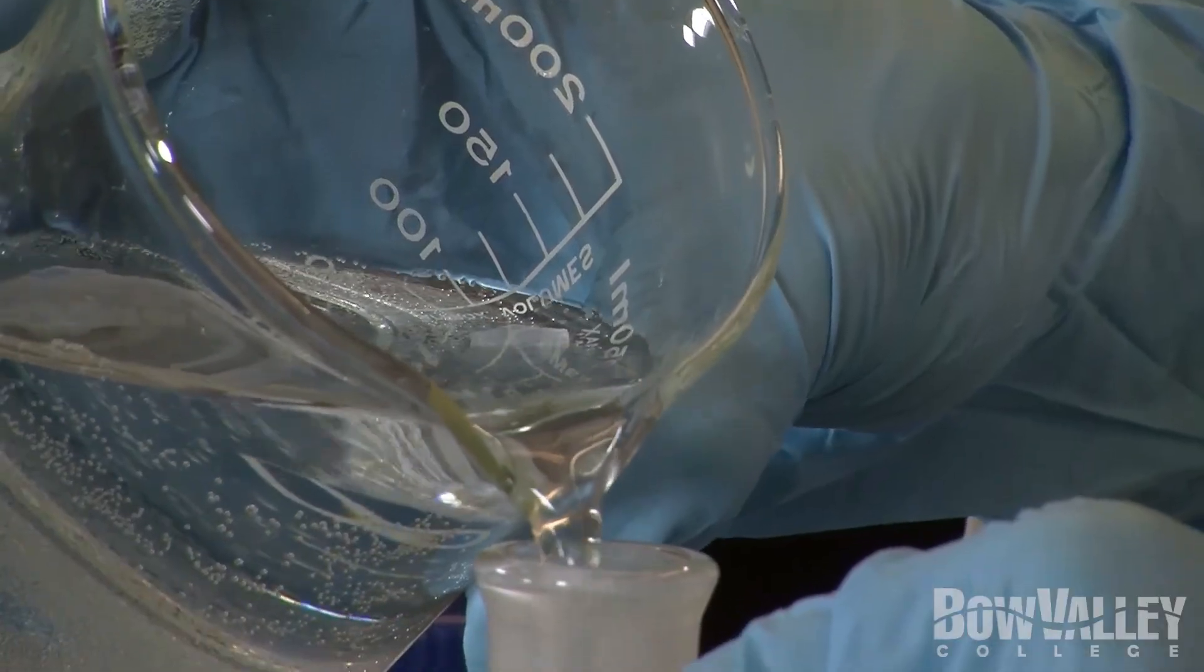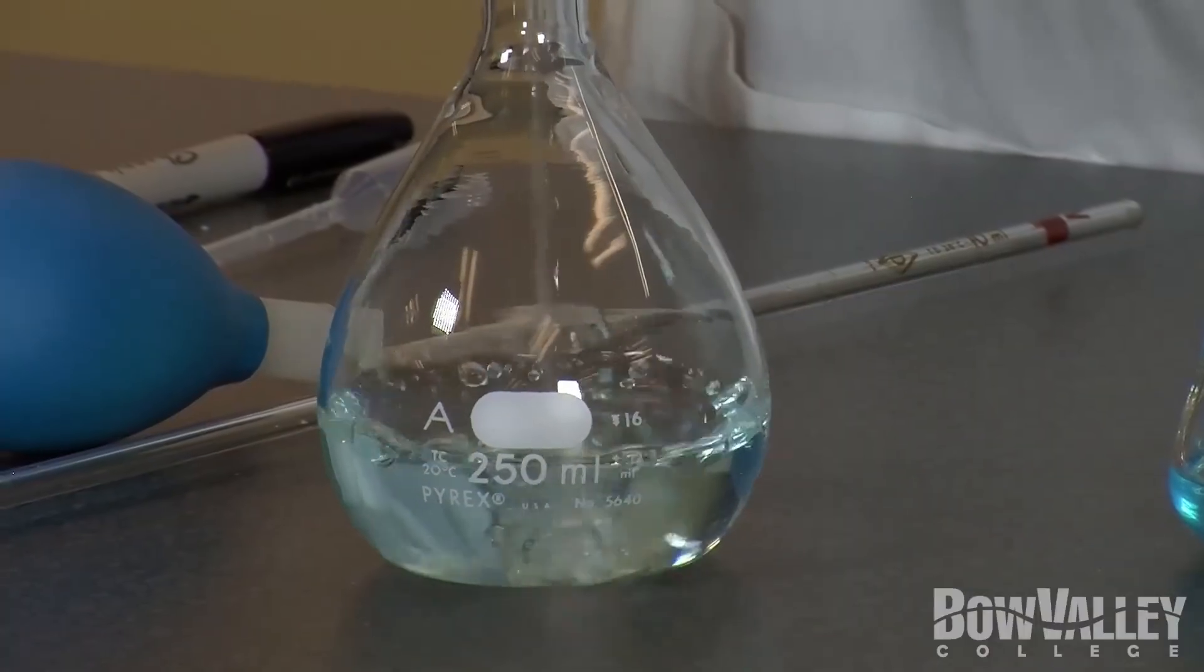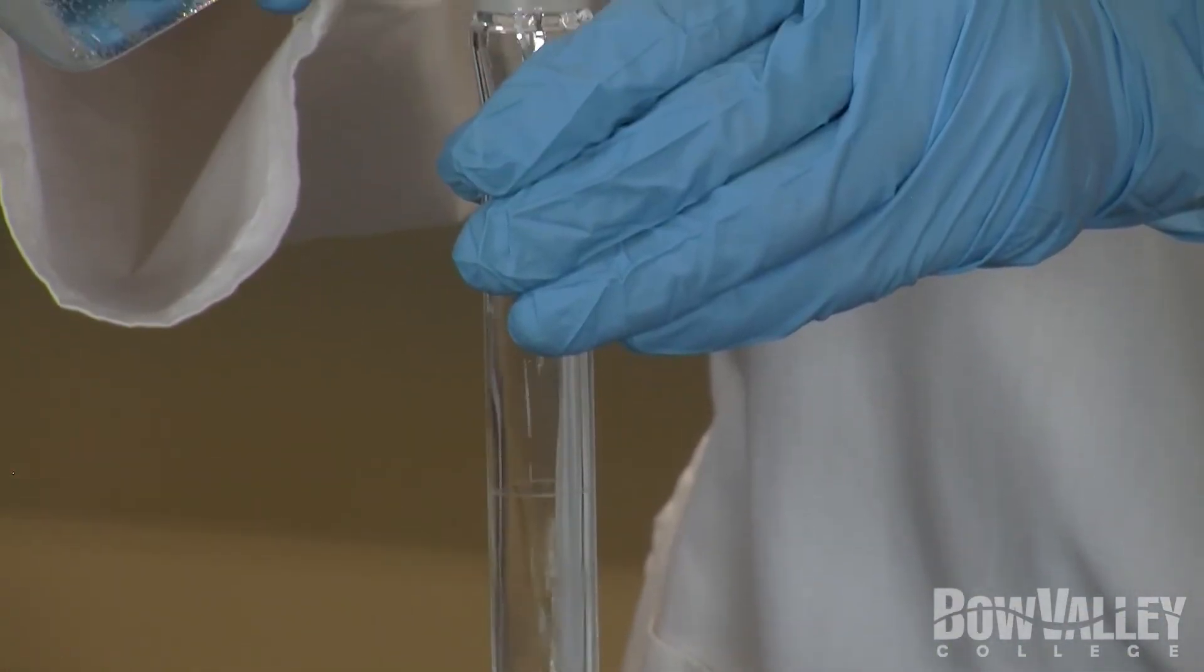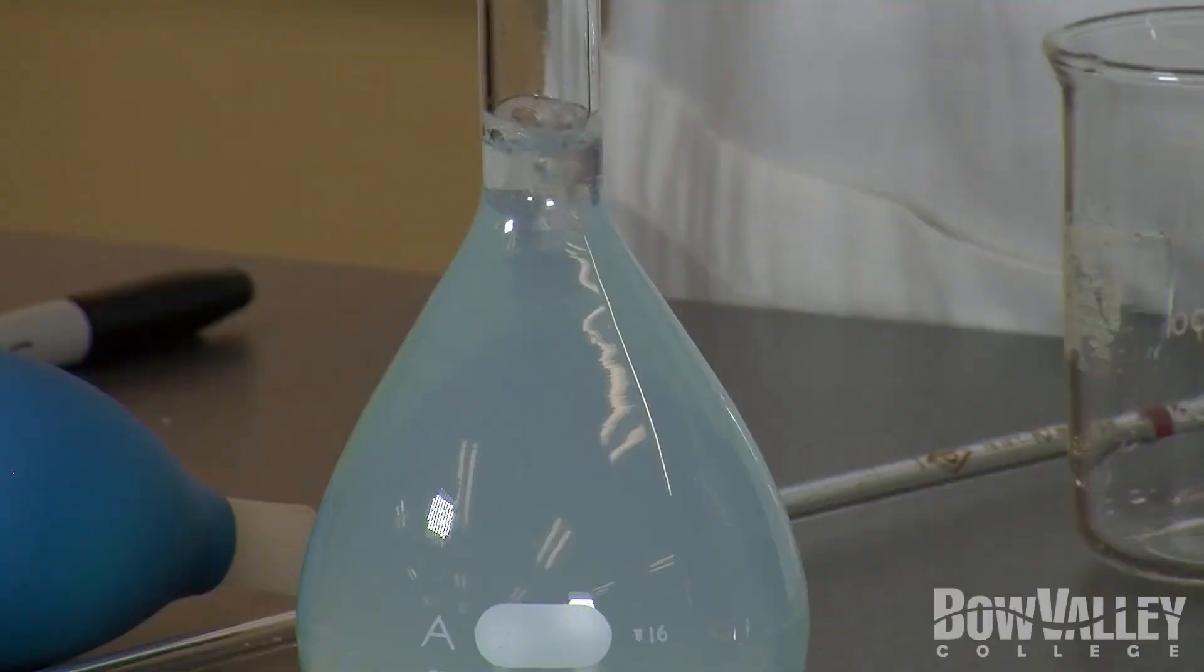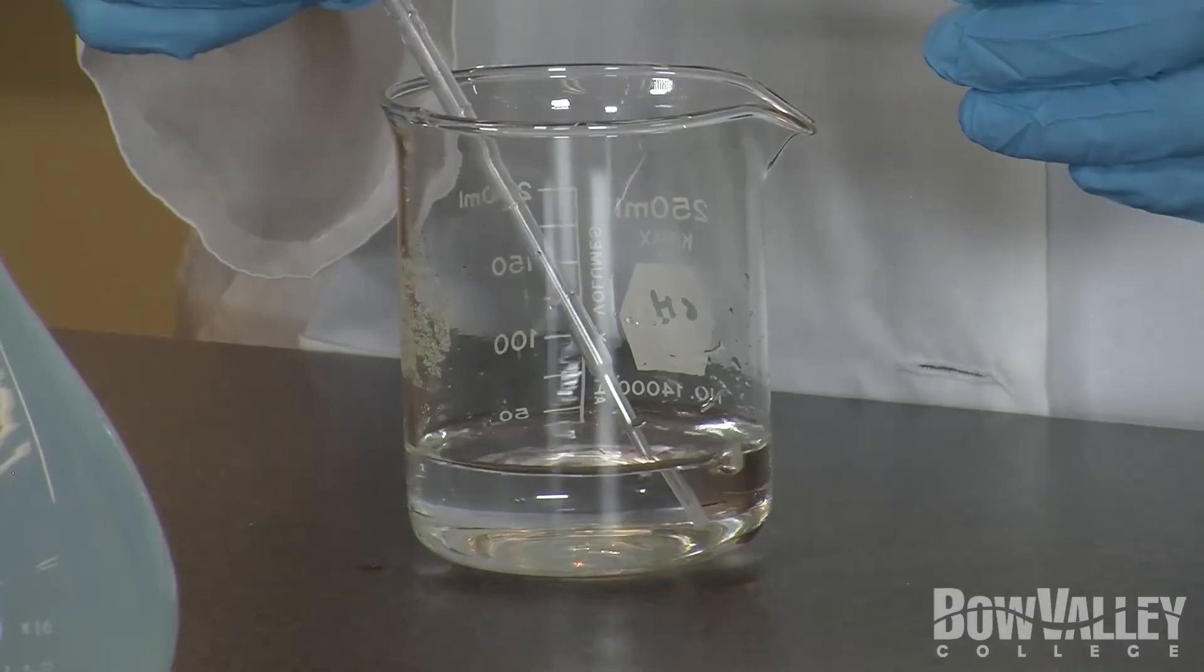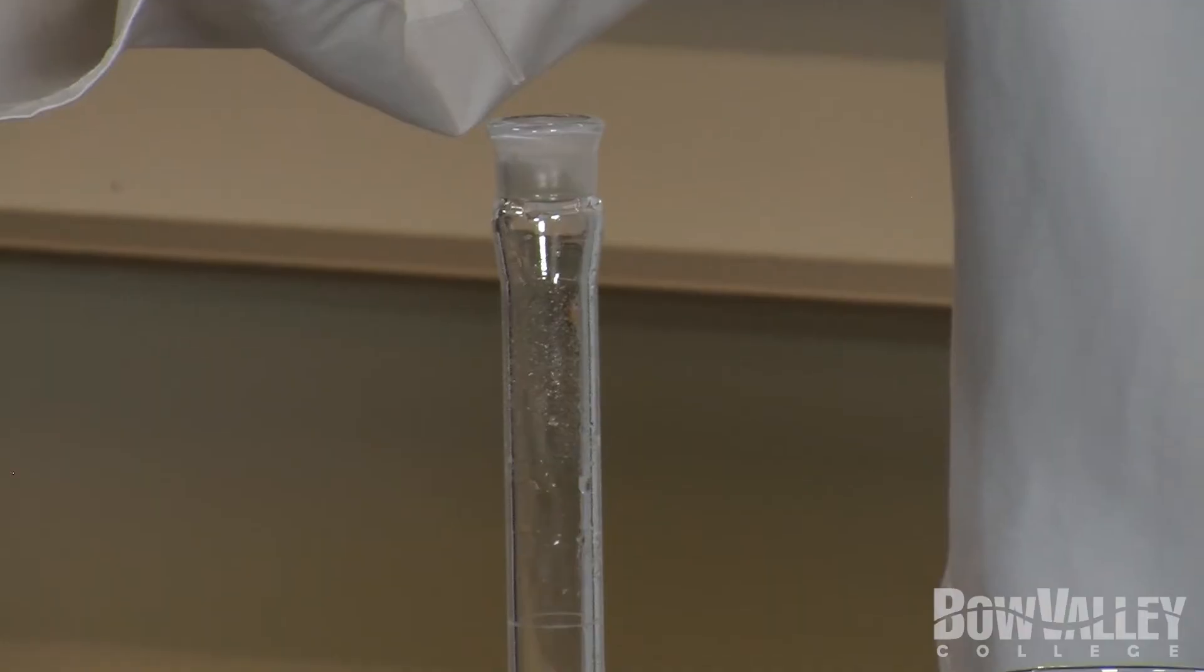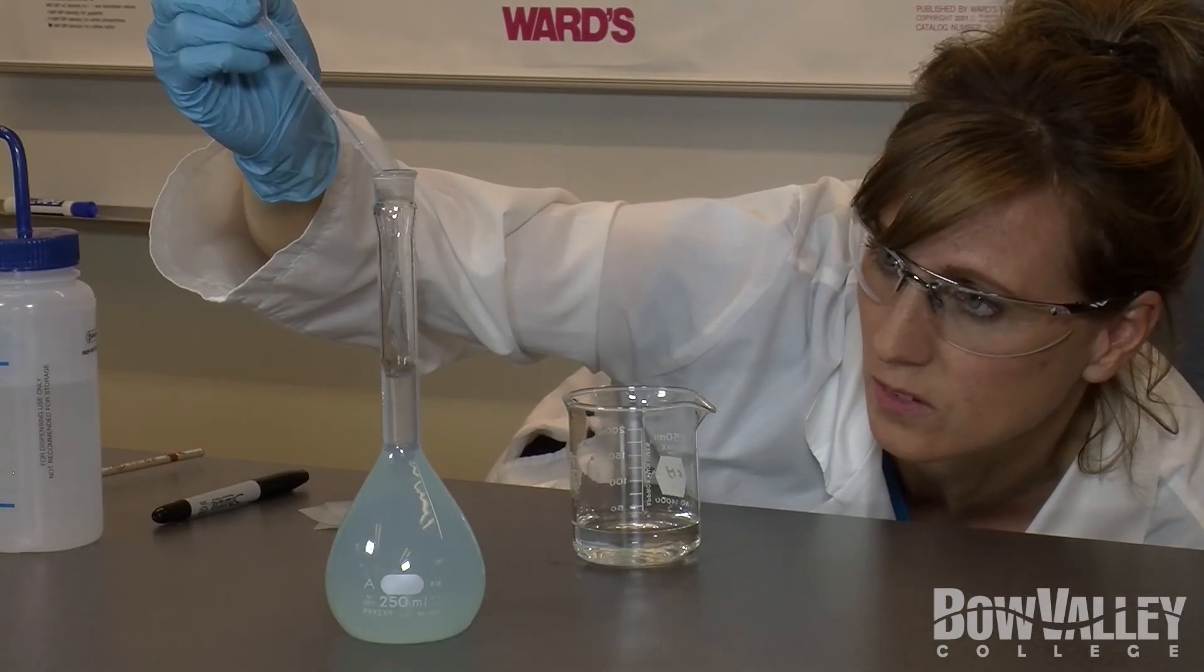Using the same procedure as before, we now add distilled water to the flask. Monitoring the level and using a disposable pipette for the last few drops. Once again, the bottom of the meniscus should be sitting on top of the line marked on the neck of the flask.